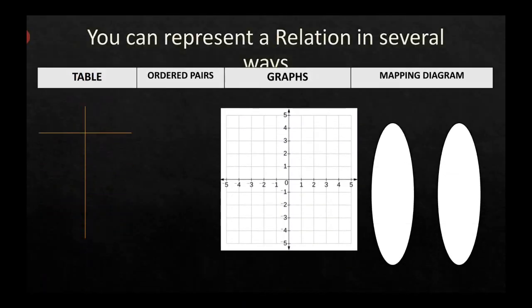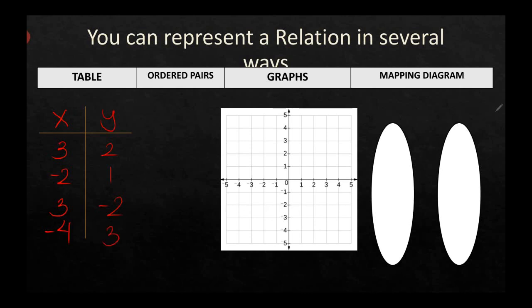We can represent a relation in several ways: a table, ordered pairs, graphs, and a mapping diagram. A table of values is a graphic organizer or chart that helps us determine two or more points that can be used to create a graph. Before we graph or plot a point, we usually need to construct a table of values. For example, we have x (domain) values and y (range) values such as 3 and 2, negative 2 and 1, 3 and negative 2, and negative 4 and positive 3.